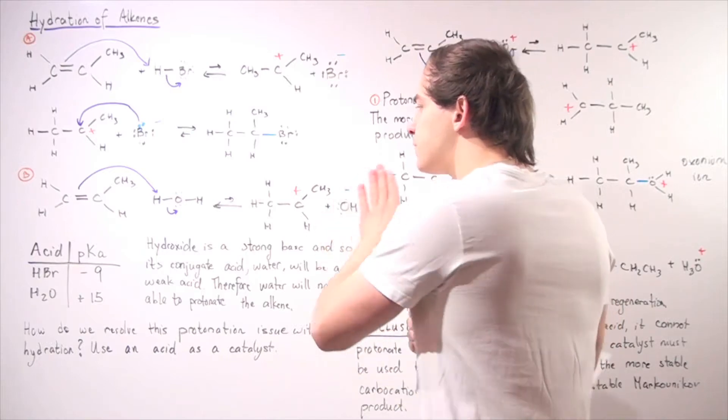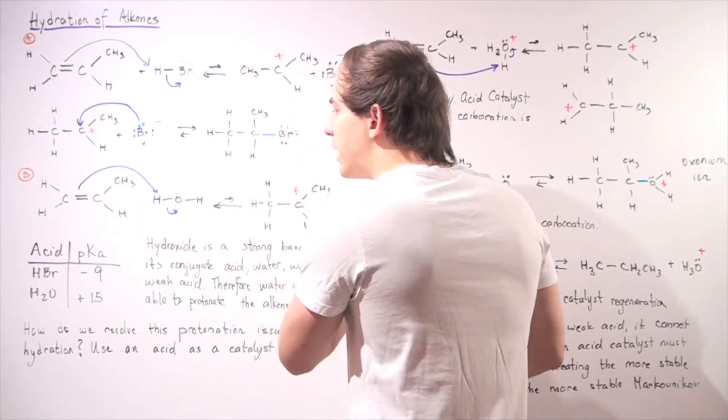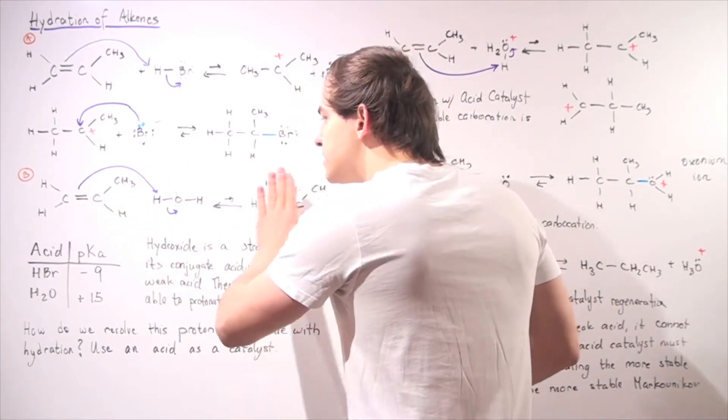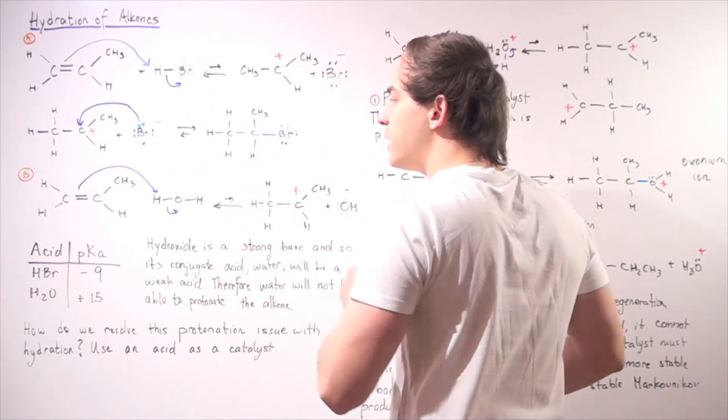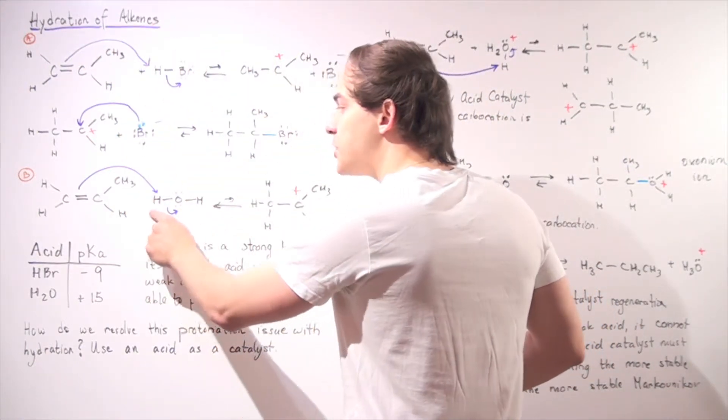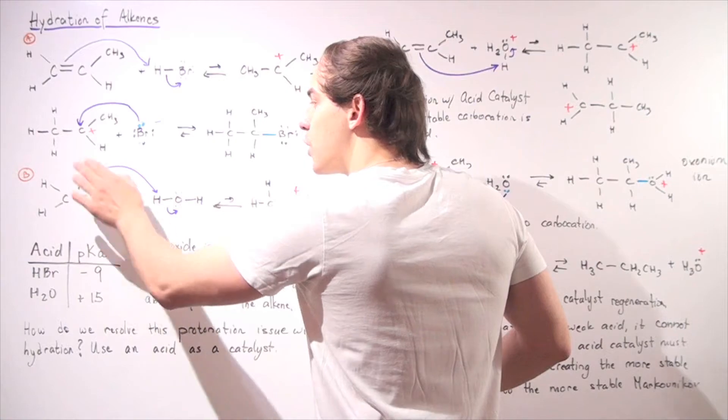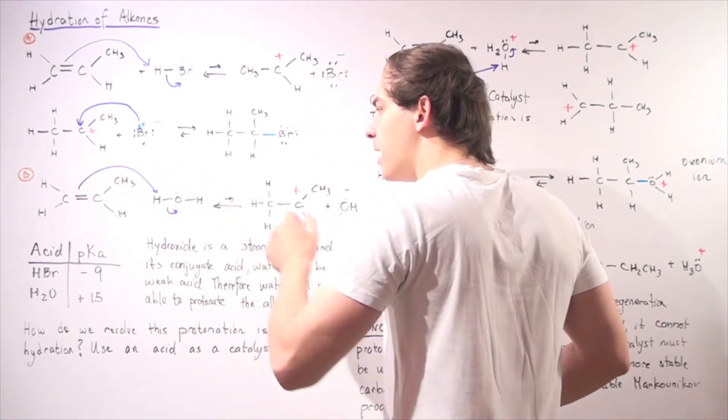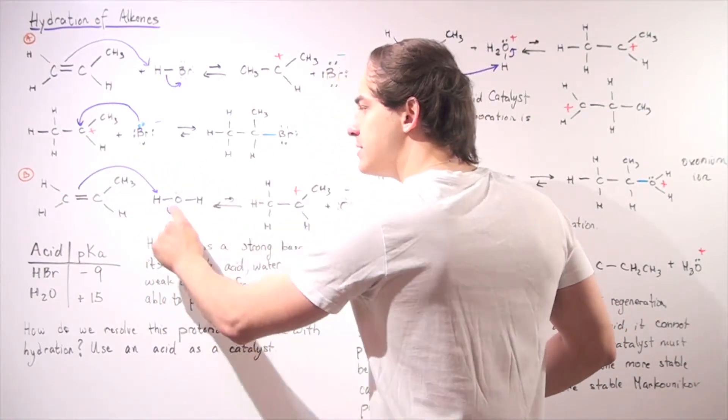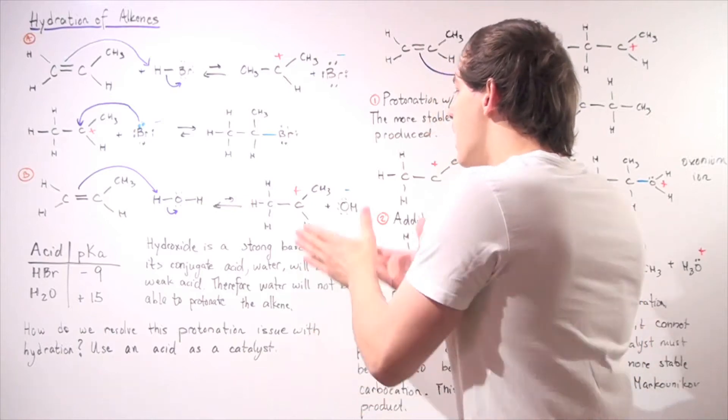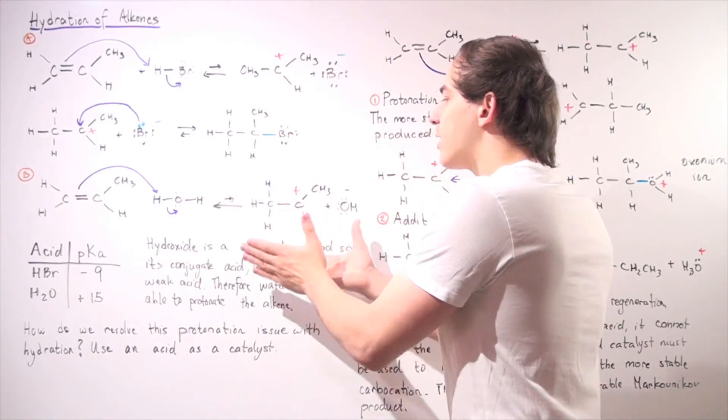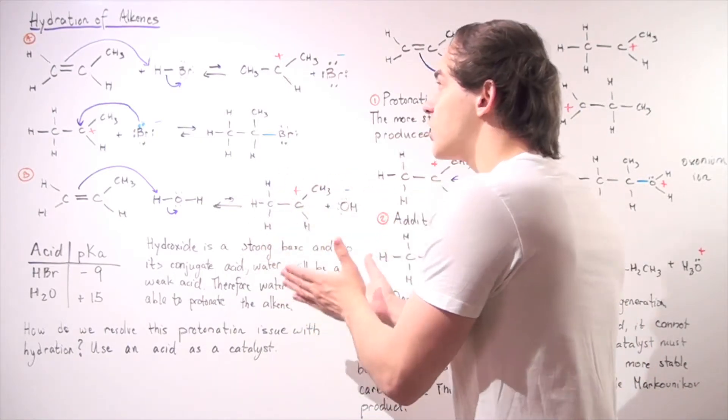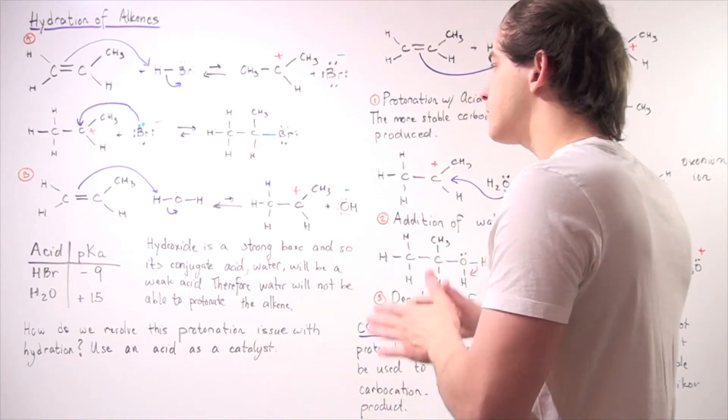Well to answer this question, let's first look at the mechanism. So in the mechanism, this is very similar to the above first step. We have our capture of this H. So the pair of electrons in the pi bond of the double bond takes this H displacing this hydroxide, forming a hydroxide and our carbocation, our secondary carbocation.